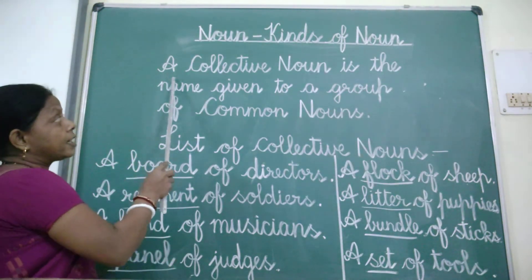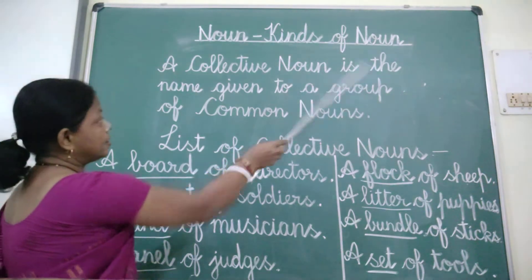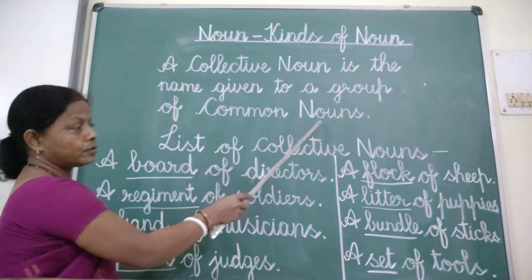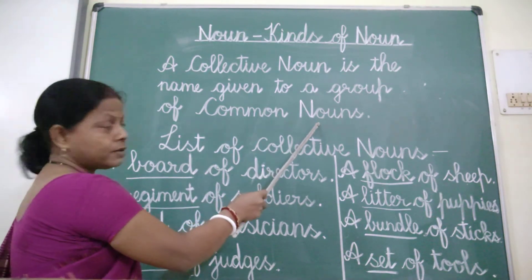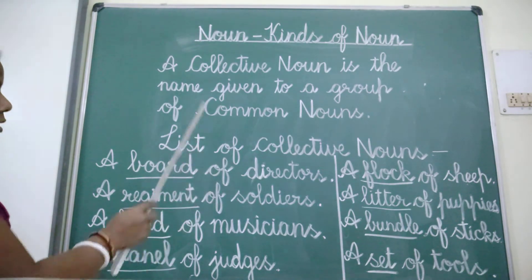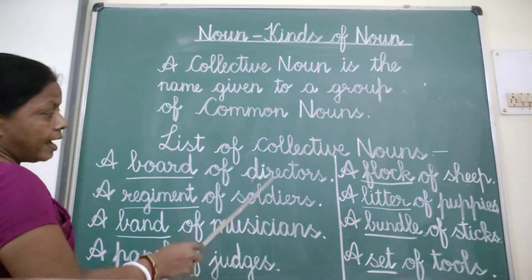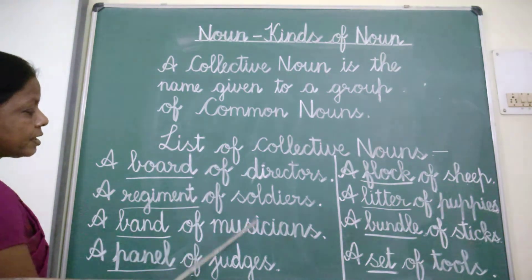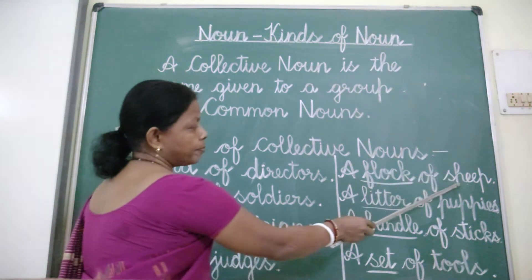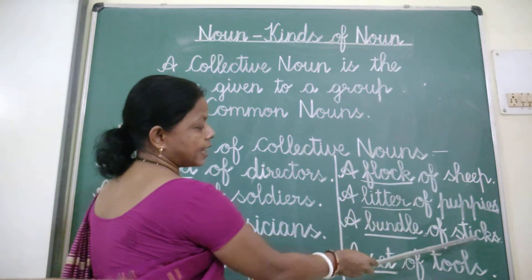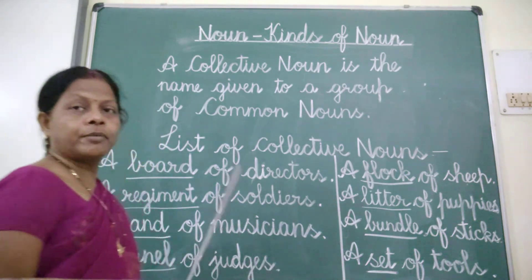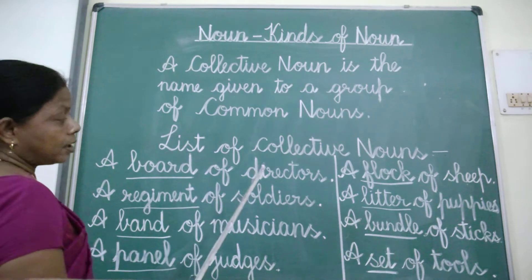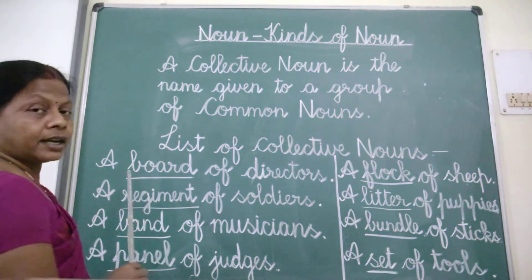A collective noun is the name given to a group of common nouns. Here is a list of collective nouns, and the words — directors, soldiers, musicians, judges, ships, puppets, sticks, and tools — all these are common nouns. The group or collection of common nouns is known as a collective noun.